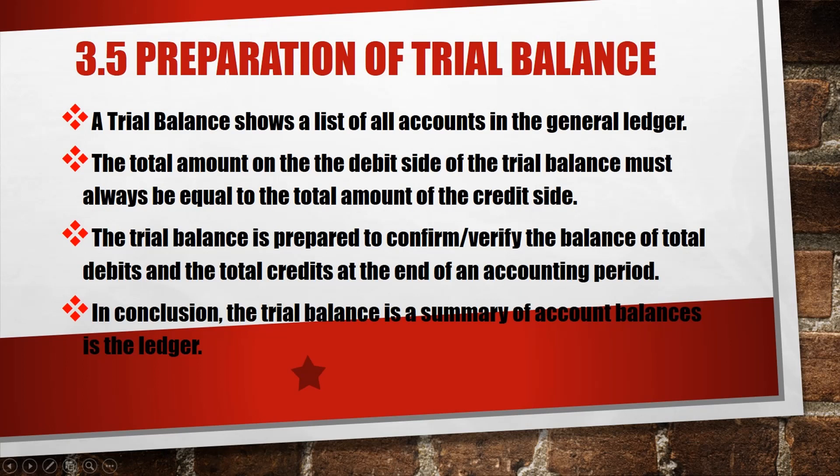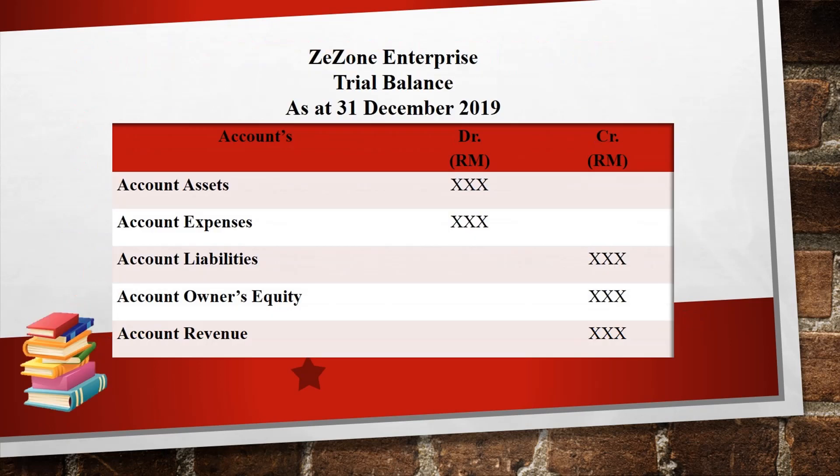In conclusion, the trial balance is a summary of account balances as the ledger. Trial balance has three columns: accounts name, debit, and credit column.